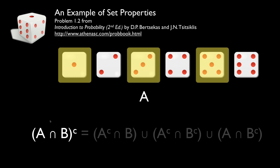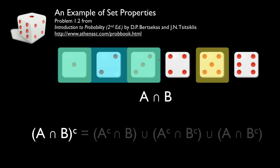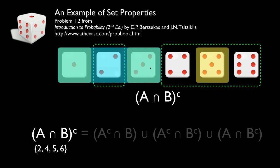Now let's look at the left side, which is the complement of the intersection of A with B. Set A contains odd outcomes one, three, five. Set B contains outcomes less than four. The intersection of those two sets covers any outcome in both, which is one and three. The complement of that intersection would be anything not covered by both: two, four, five, six. So the complement of the intersection of A with B is the set containing two, four, five, six.